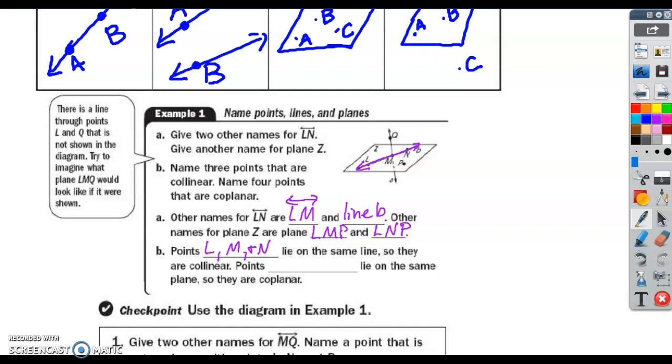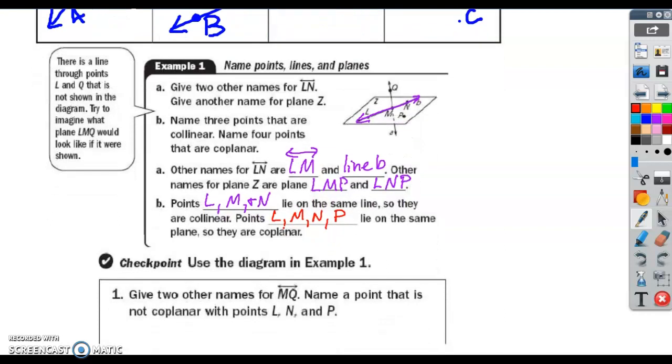Name three points that are collinear. That means that all three of those points have to be on the same line. So here we would use L, M, and N. And you wouldn't want to use Z, because Z is not a point. It's the name of the plane. And we know that because there's no dot next to it. Name four points that are coplanar, that are all in the same plane. We want points that are coplanar: L, M, N, and P. Write down your questions as you're watching these videos, because when you come into class, we're in no rush. We will talk about whatever you guys want to talk about.